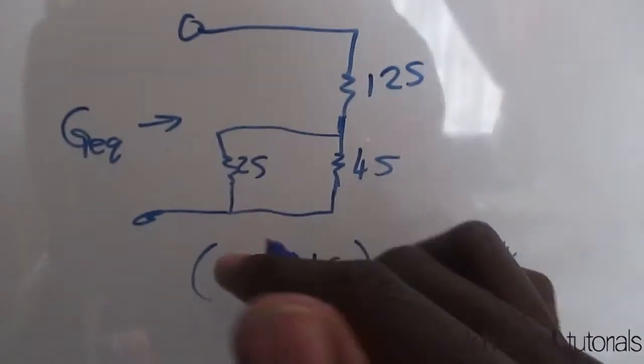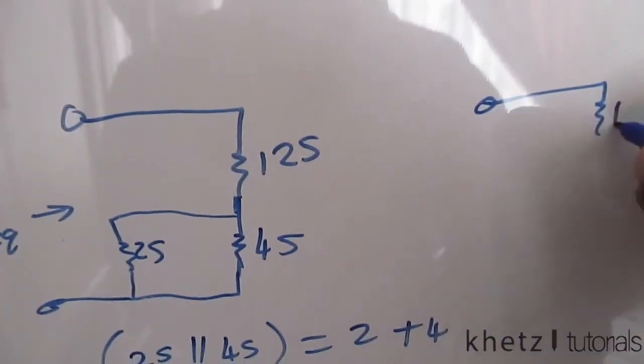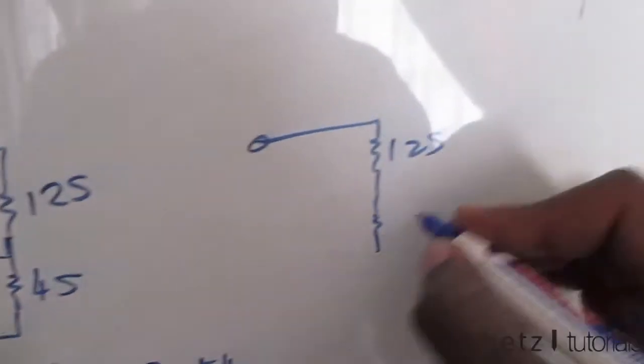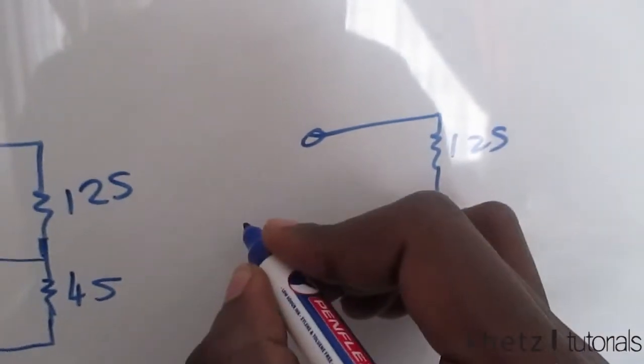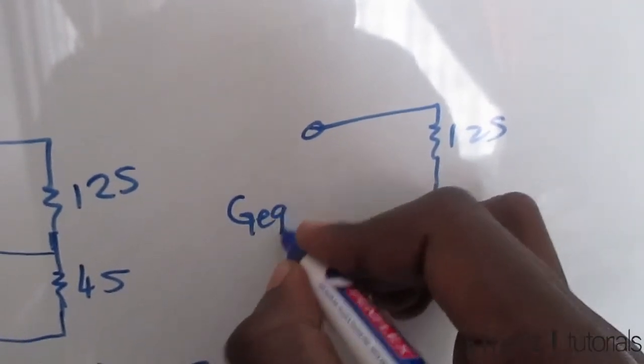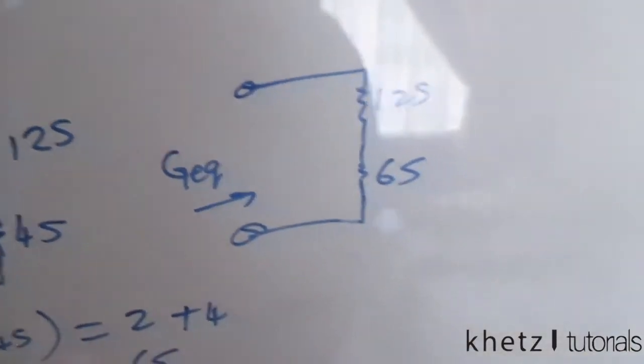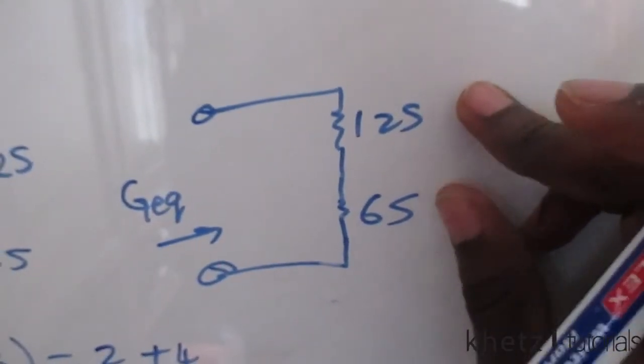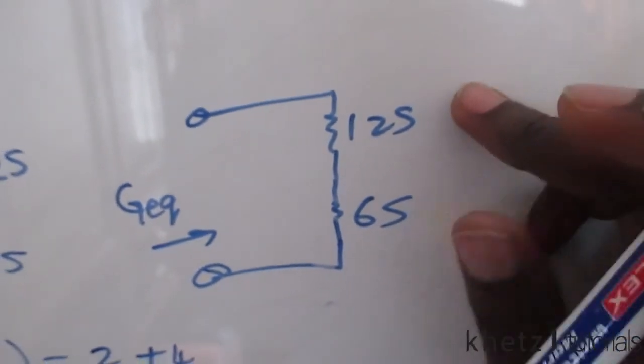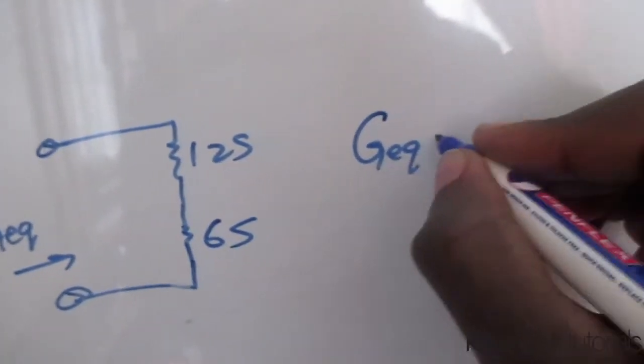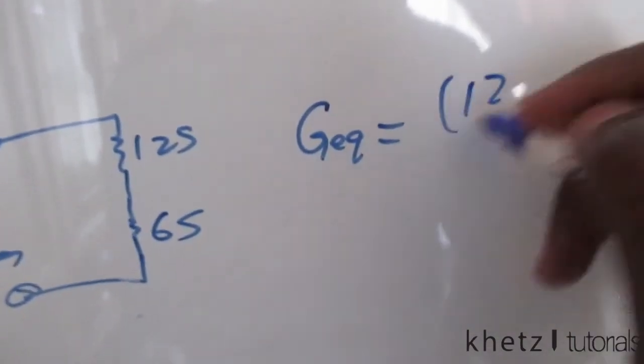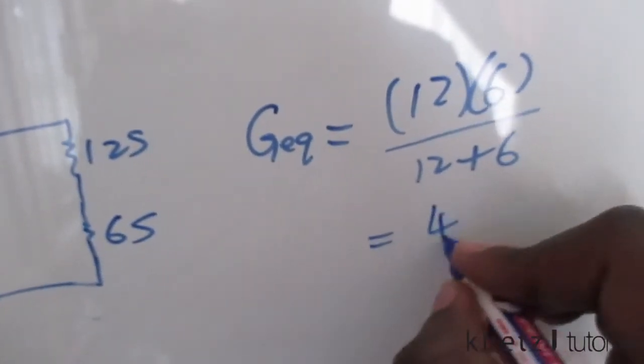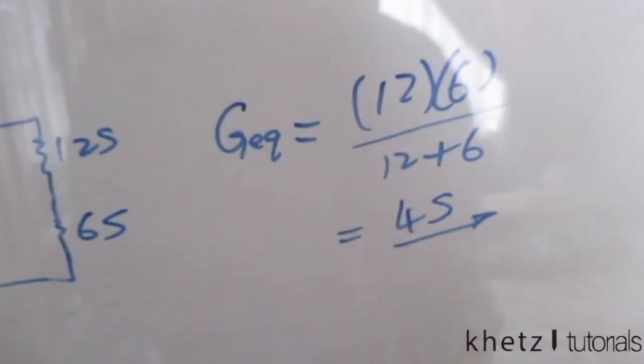And then now after doing that, we have 12 up here and we have six, which we just calculated now, and calculating the equivalent from these two is our answer. So this is 12 Siemens in series with six Siemens. So G equivalent will be equals to 12 multiplied by six divided by 12 plus six, which is four Siemens. That is your answer.